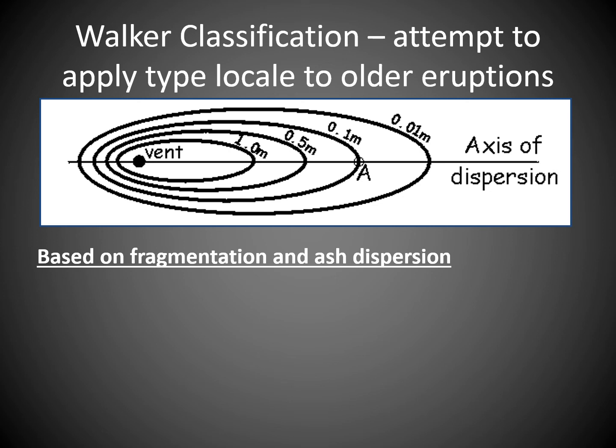So George Walker came up with a classification system for older eruptions, based on how fragmented the material is and the pattern of how the material is spread over the landscape — fragmentation and dispersion. Like with all science, he wanted something repeatable that others could follow, yielding results that would be comparable and accurate.